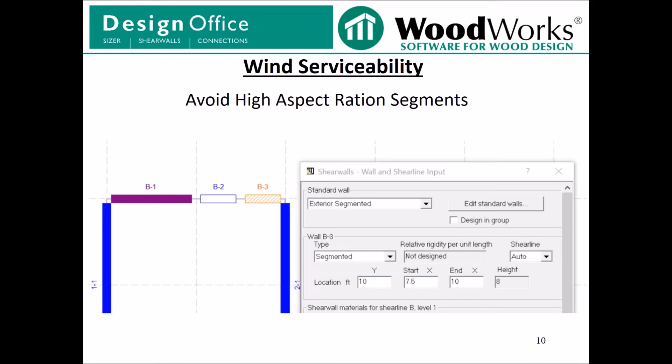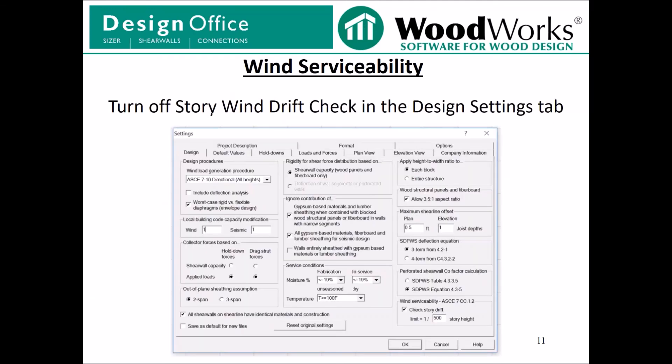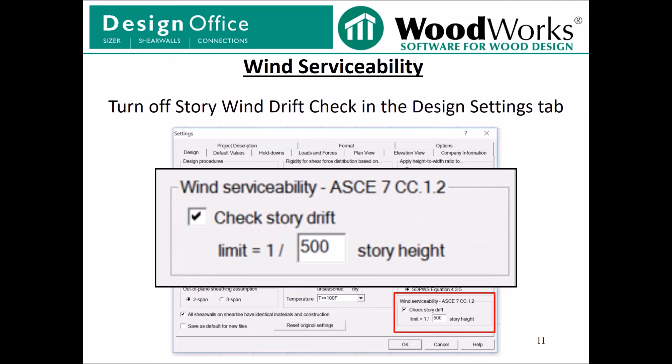To create a non-shear wall segment takes three steps. First, click on the segment you would like to make a non-shear wall. Then make sure the 'design in group' checkbox is not toggled. Then toggle the wall type to non-shear wall. Doing these steps will turn the segment into a non-shear wall. I did this for both wall segments B2 and B3 in the screen capture. Finally, if you decide that wind serviceability is not a concern, you can quickly turn off the story drift check in the Design Settings tab by unchecking the 'check story drift' box and pressing OK before running the design.